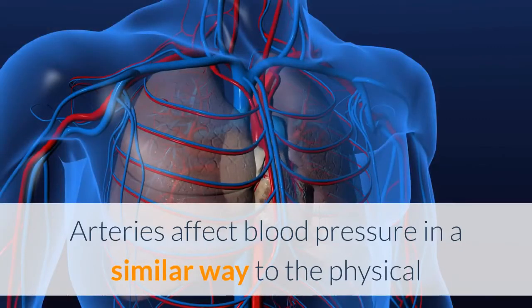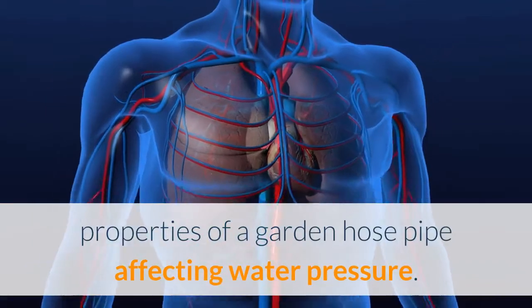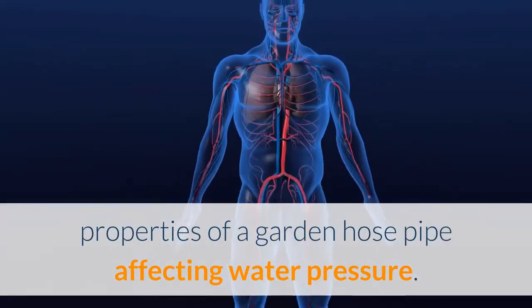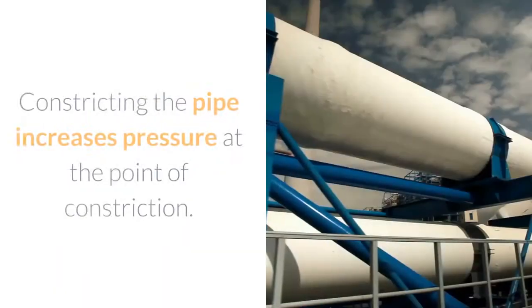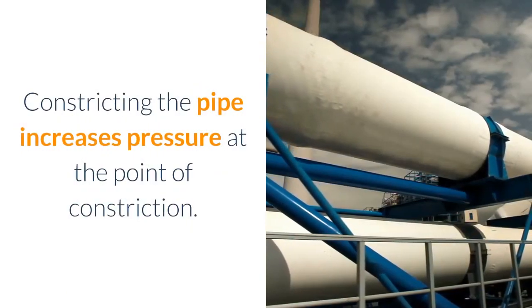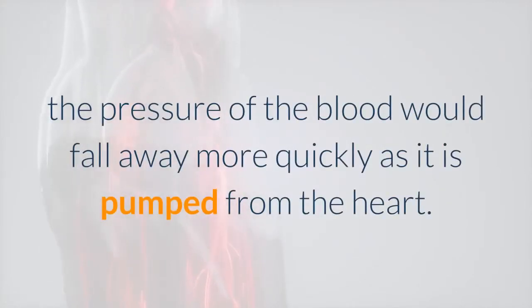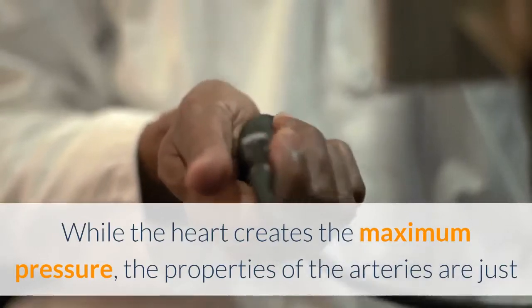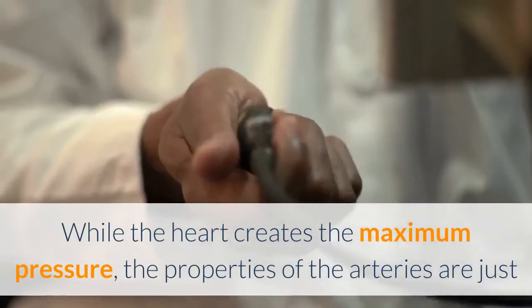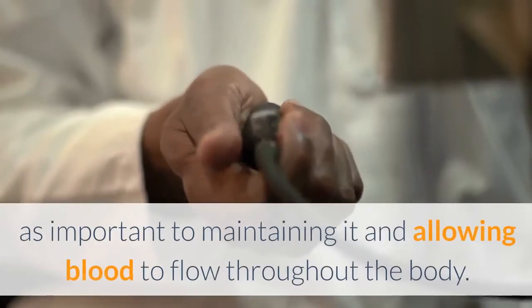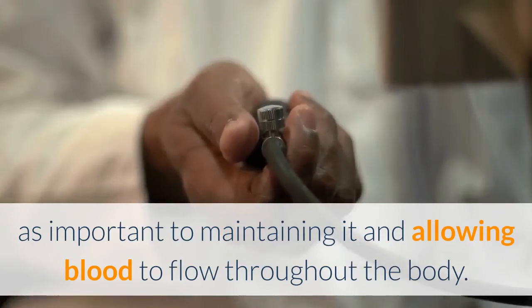Arteries affect blood pressure in a similar way to the physical properties of a garden hose pipe affecting water pressure. Constricting the pipe increases pressure at the point of constriction. Without the elastic nature of the artery walls, the pressure of the blood would fall away more quickly as it is pumped from the heart. While the heart creates the maximum pressure, the properties of the arteries are just as important to maintaining it.